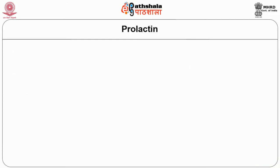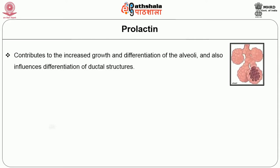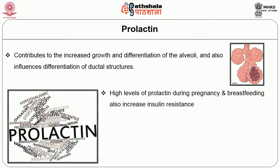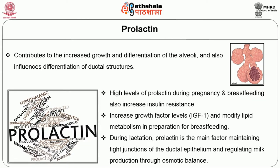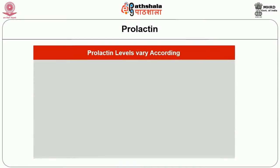Next is the hormone prolactin. Prolactin contributes to the increased growth and differentiation of alveoli and also influences the differentiation of ductal structures. High levels of prolactin during pregnancy and breastfeeding increase insulin resistance and elevated IGF-1 levels, and modify lipid metabolism in preparation for breastfeeding. During lactation, prolactin is the main factor maintaining tight junctions in the ductal epithelium and regulating milk production through osmotic balance.